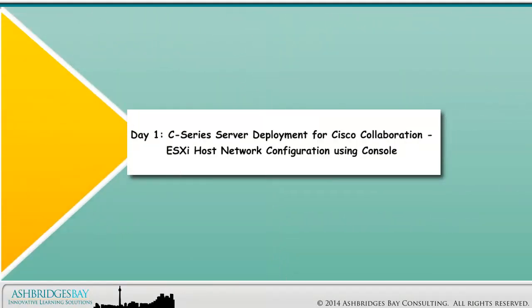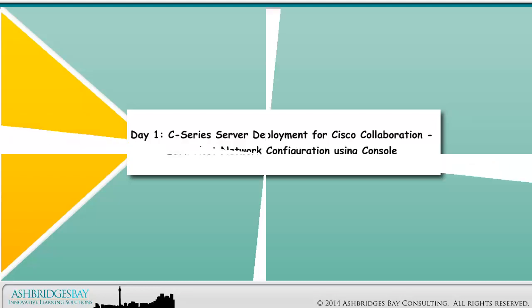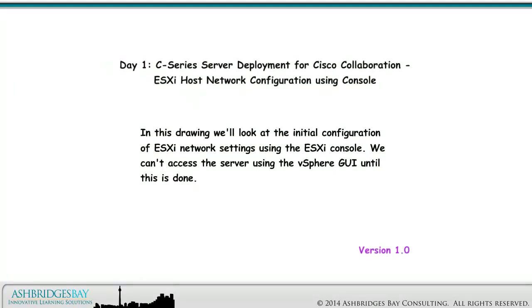Welcome to our drawing: Day 1 C Series Server Deployment for Cisco Collaboration, ESXi Host Network Configuration Using Console. In this drawing, we'll look at the initial configuration of ESXi Network Settings using the ESXi Console. We can't access the server using the vSphere GUI until this is done.